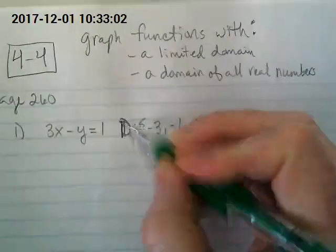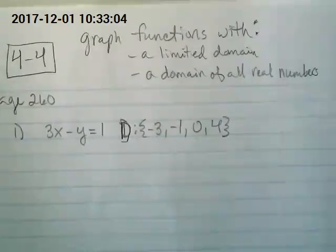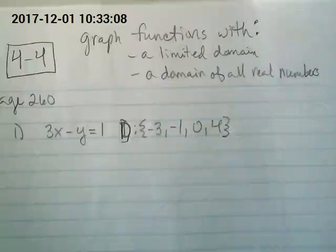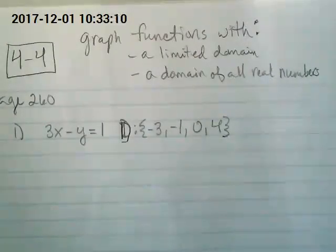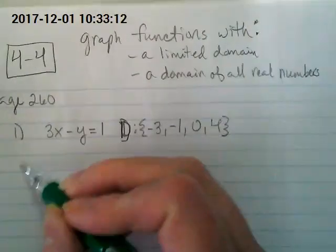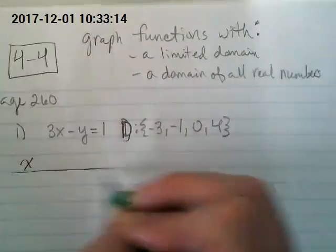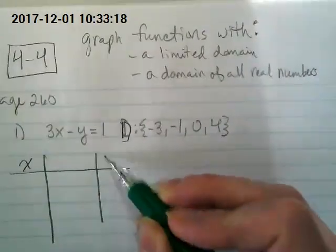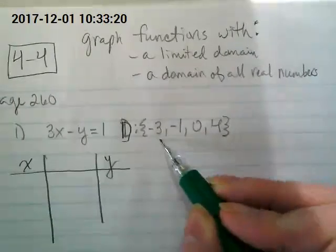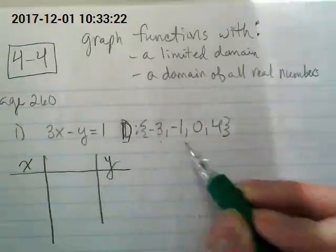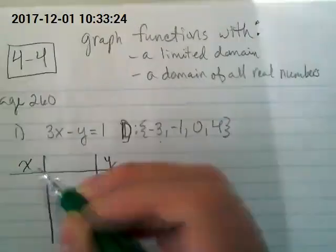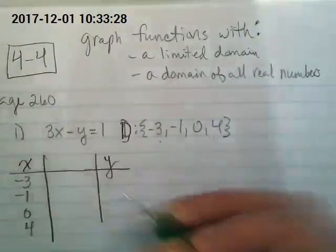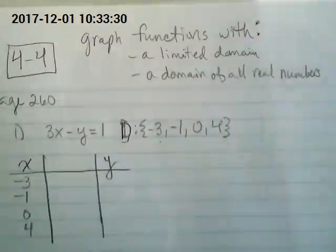That's my D there, sorry about that. That means we're going to make an xy table on our binder paper, and then we're going to use our graph paper to graph it. If I'm making an xy table here, they've given us the domain or the x values, which are negative three, negative one, zero, and four.